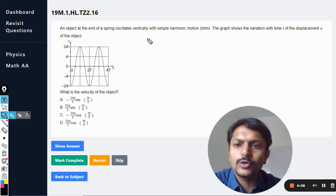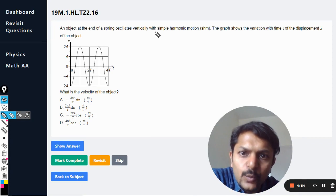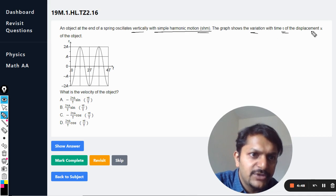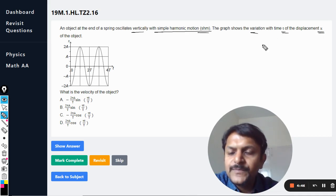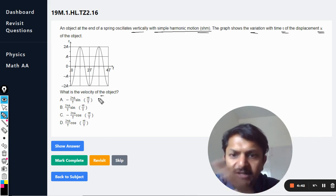Video students, let us see what is there in this question. An object at the end of a spring oscillates vertically with simple harmonic motion. The graph shows the variation with time t of the displacement x, and it is shown like this. What is the velocity of the object?